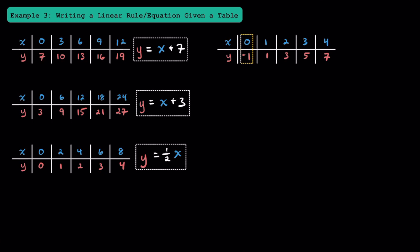And over here, 0 times 2 is still 0, and 0 minus 1 does equal negative 1. While this one was a little bit more tricky, we can write our linear equation as y is equal to 2x minus 1. This is the linear equation that represents this table.